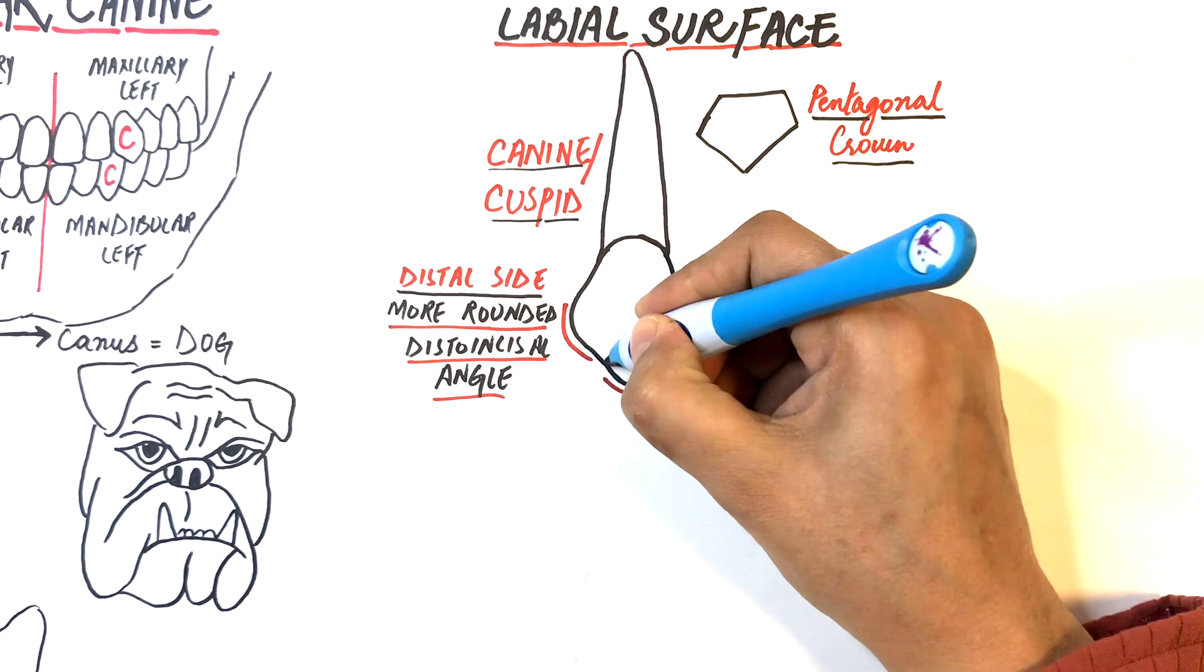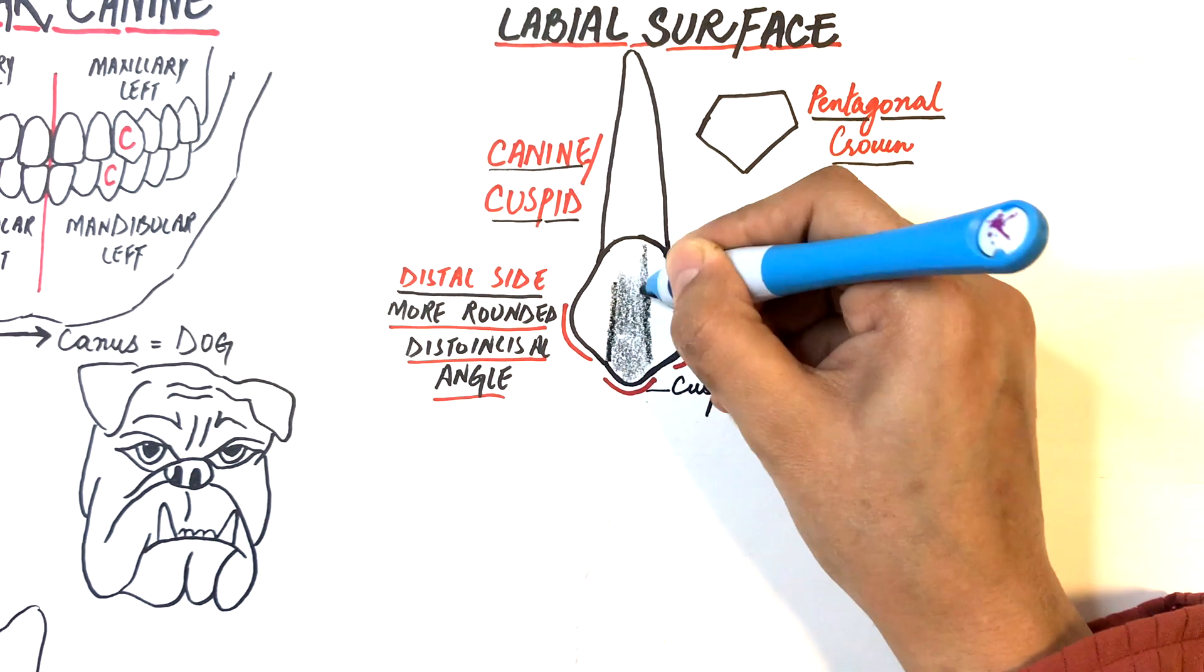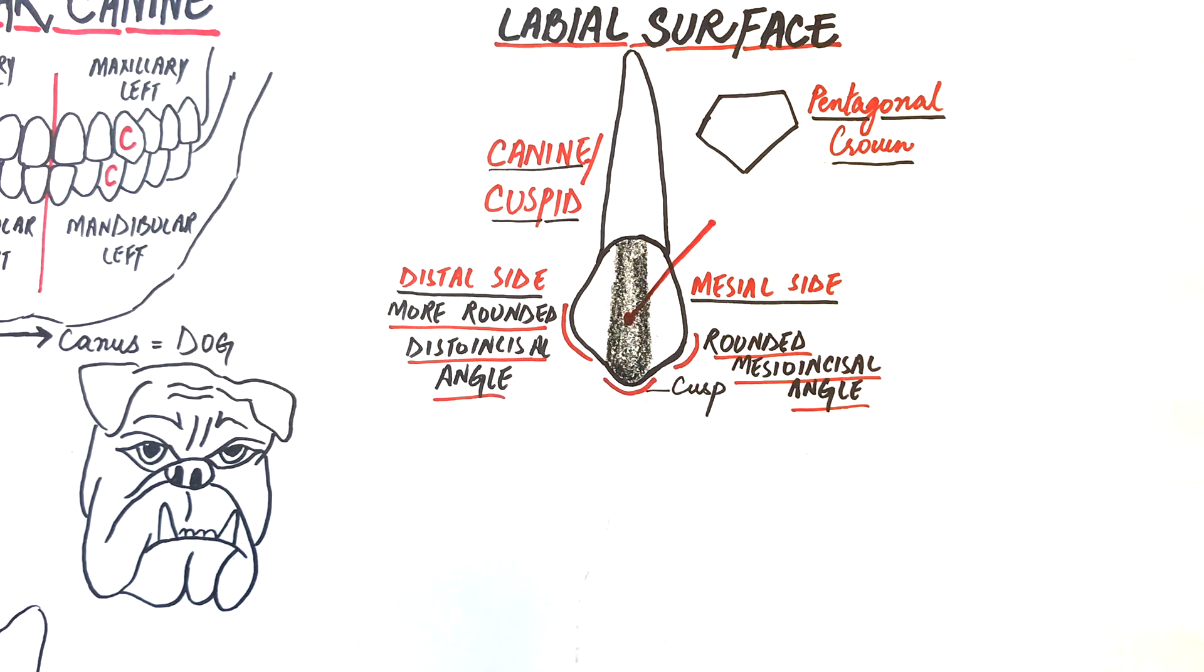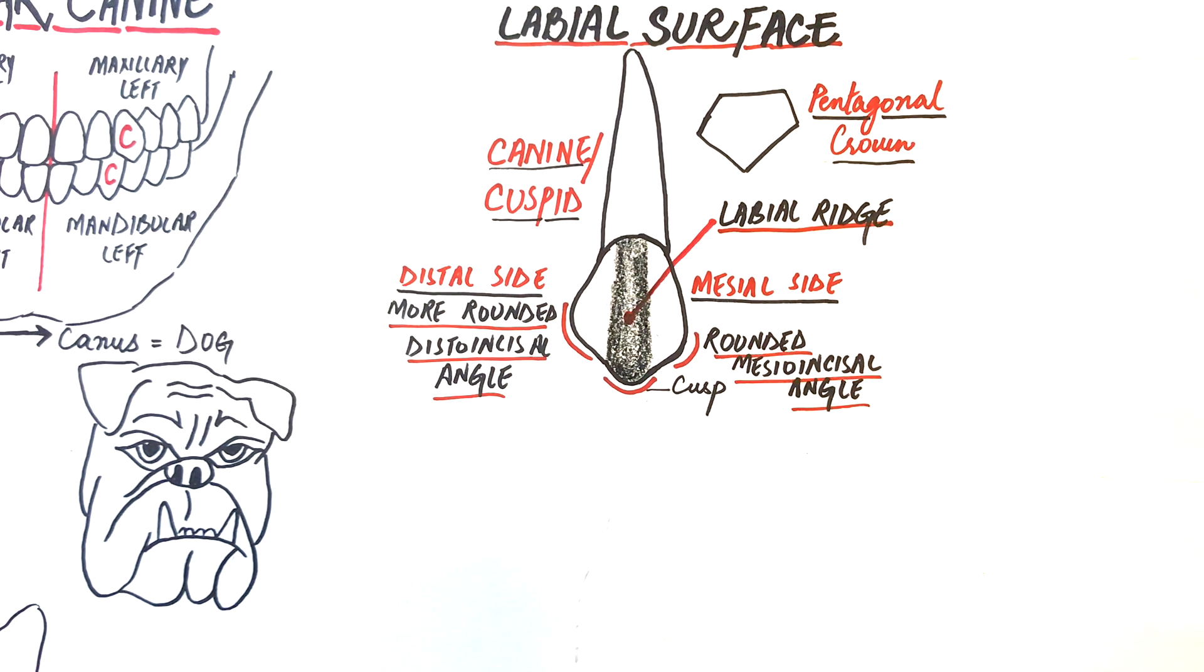The single cusp of the canine produces a labial ridge on the labial surface of the tooth, which ascends through the middle of the crown in a labiolingual direction. This labial ridge divides the labial surface into three lobes, with the middle lobe being the most prominent lobe.